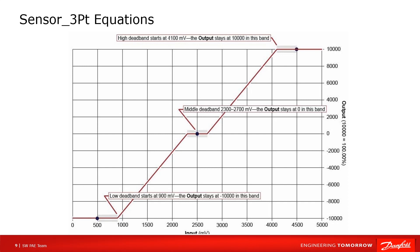Compare with previous trace. There are three dead band areas after setting dead band to 1000. When input is between 2300 and 2700, output is 0. When input is below 900, output is minus 10000. And when input is above 4100, output is 10000.